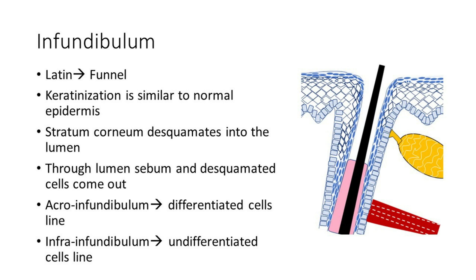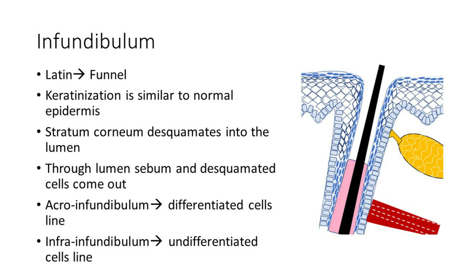The infundibulum is derived from the Latin word meaning funnel. Its keratinization is similar to that of the epidermis, with stratum corneum desquamating into the lumen of the hair follicle. Sebum and desquamated cells exit through this lumen. The infundibulum is divided into two parts: the outermost acroinfundibulum, which has differentiated cells, and the inner infrainfundibulum, which has undifferentiated cells.